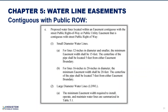Easements contiguous with public right-of-way have been updated too. Small diameter waterline requirements were modified to include placement location within the easement, considering future use. Water line easements for lines 12 inches in diameter and smaller have been increased from 10 feet to 15 feet, with the center line placed 5 feet from either easement boundary. For 16- to 20-inch diameter lines, the 20-foot minimum is kept but the center line must be placed 7 feet from either easement boundary. Large diameter water line easements follow Table 5.1.